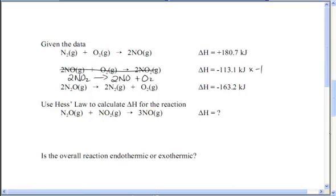So now I go through and I make sure everything's got the correct number. So I need one N2O, but I have two. So I'm going to divide everything in this reaction by two. I need one NO2, but I have two of them. So again, I'm dividing everything by two. And I need three NOs on the right. Now I have two NOs here plus one NO gives me my three NOs. So now I have the correct number of everything.